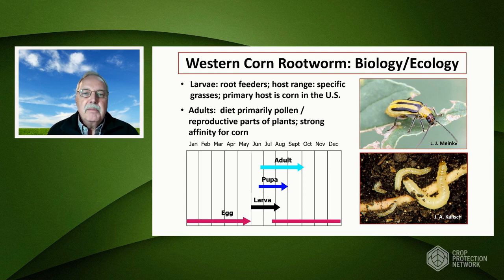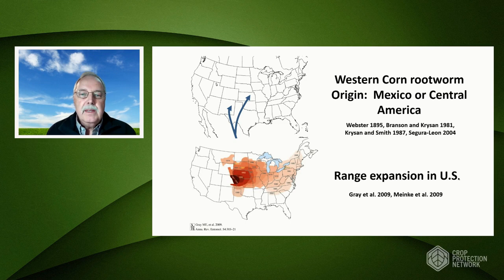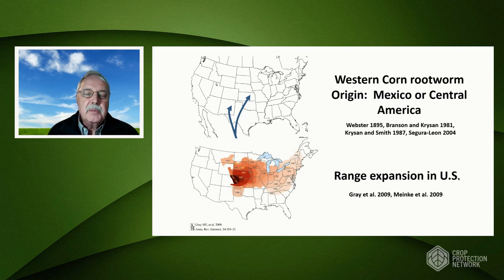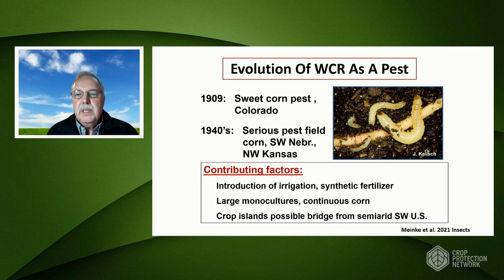Most phylogenetic research has documented that the Western corn rootworm originated either in Central America or Mexico, then moved up into the Southwestern U.S. It was first collected in what is now Wallace County, Kansas — very western Kansas. You can see on this map there's been a general range expansion across the United States from about 1929 to the present. The Western corn rootworm wasn't documented as a pest until 1909 when it first attacked sweet corn, but didn't become the serious pest it is today in field corn until the 1930s and 1940s in Southwestern Nebraska and Northwestern Kansas.